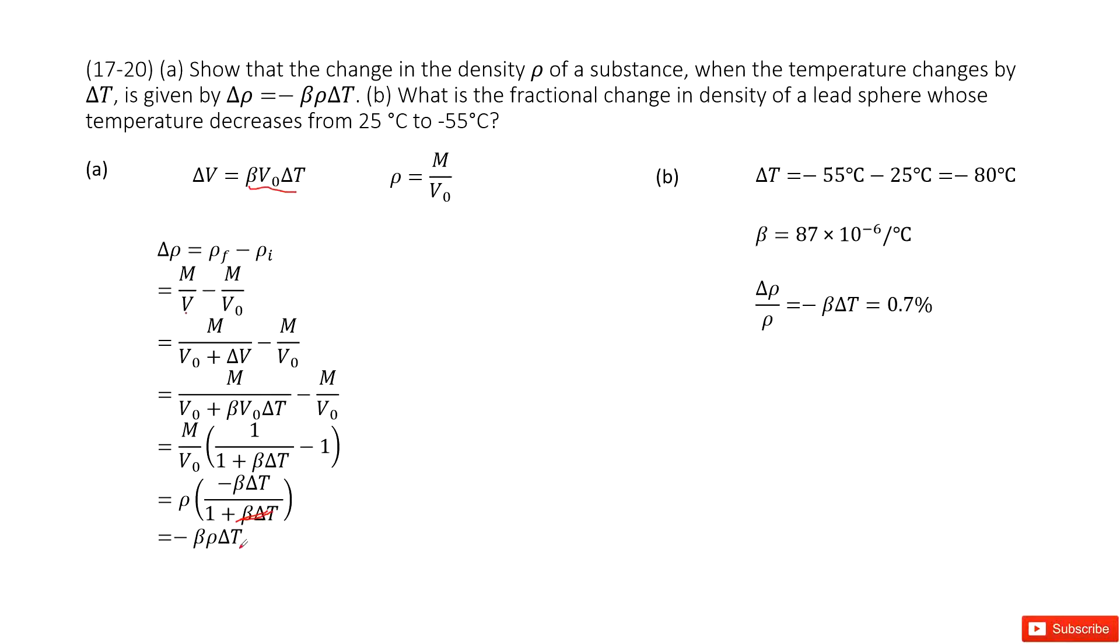The next question tells you the delta T is just negative 80 degrees from the initial temperature to the final temperature. It asks you what is the fractional change in the density in lead. Now lead, this tells you the material. So check the textbook. You can get the expansion coefficient beta for lead is this number.